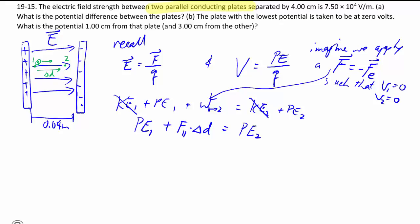So now remember that this force is actually going opposite. The force we're applying is opposite to the motion of the electrons to slow it down. So that's why this force is anti-parallel, giving us minus QE delta D is equal to PE2 minus PE1.